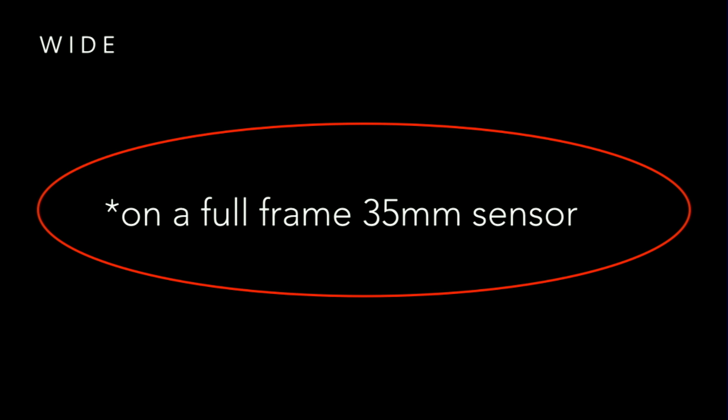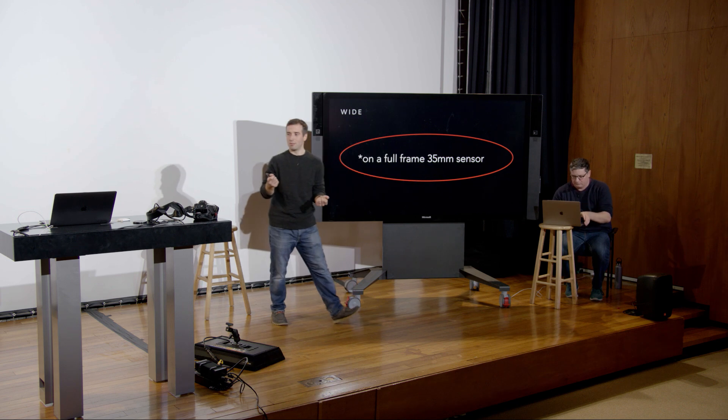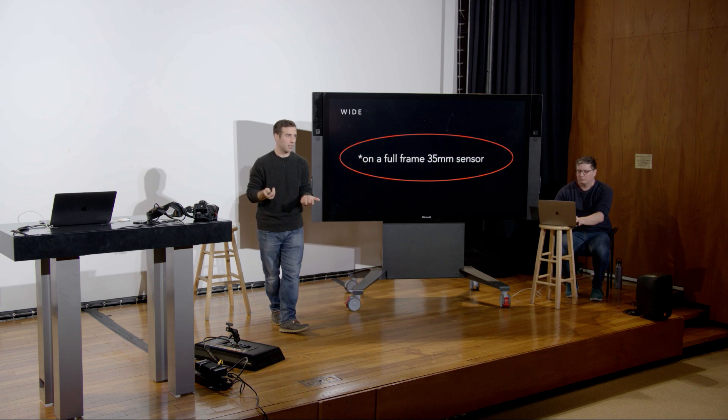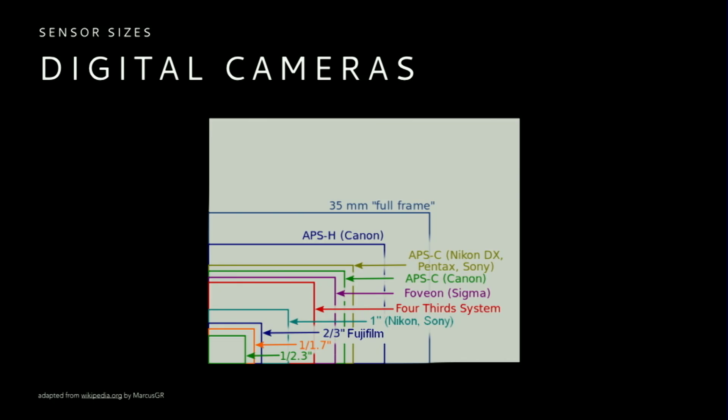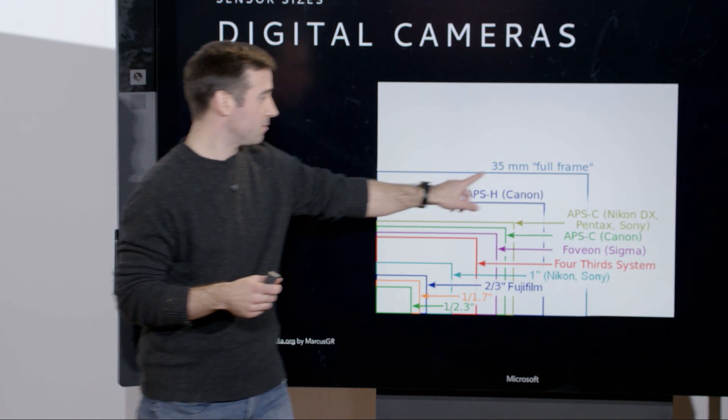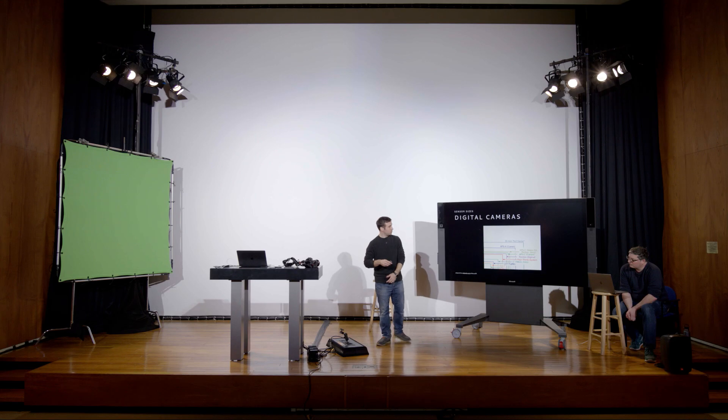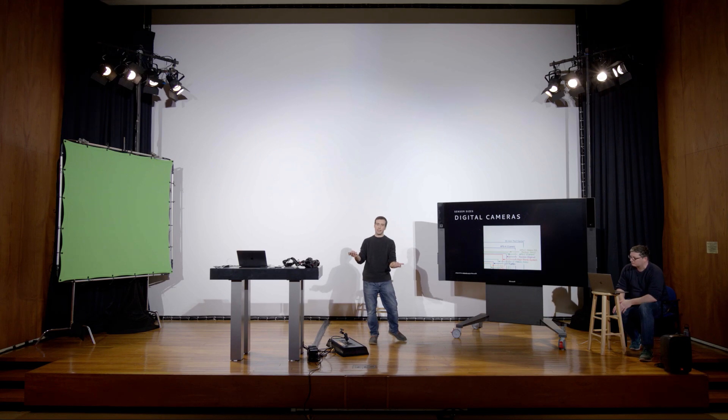I keep mentioning equivalency on a 35mm sensor — this is an important distinction. The actual sensor size in your camera affects what a given lens looks like. Digital cameras have many different sensor sizes; the two typical ones in consumer and prosumer cameras are APS-C (Canon and Nikon are very similar sizes) and the full frame 35mm sensor.